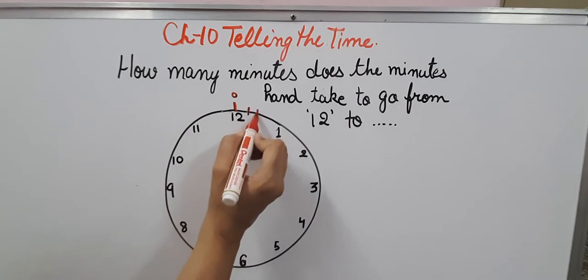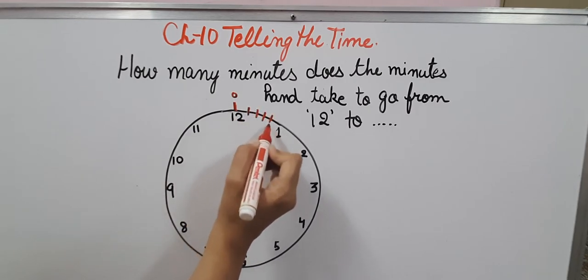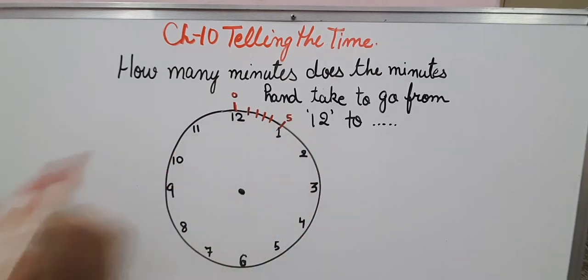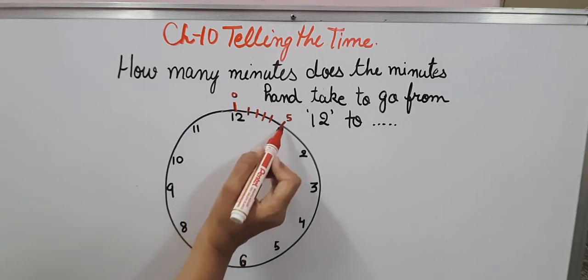So it will be 1, 2, 3, 4 and this hand will be 5. So at 1 it will be 5 points. Then again we move from 5, 6, 7, 8, 9 and this will be 10.